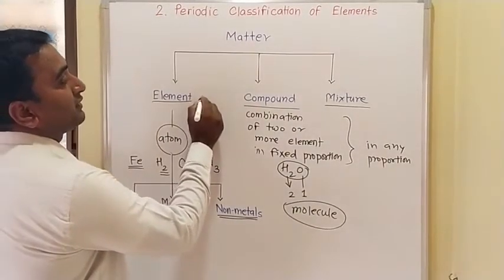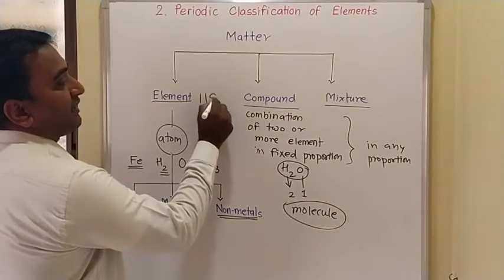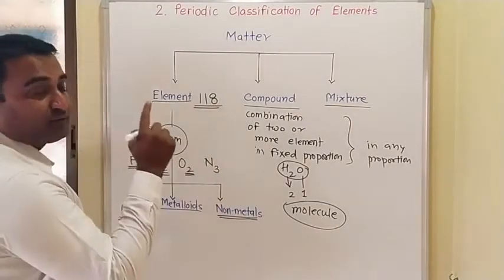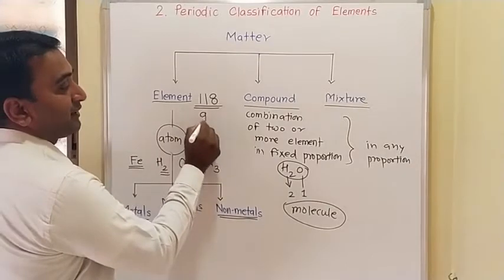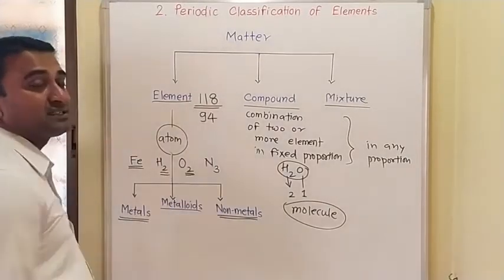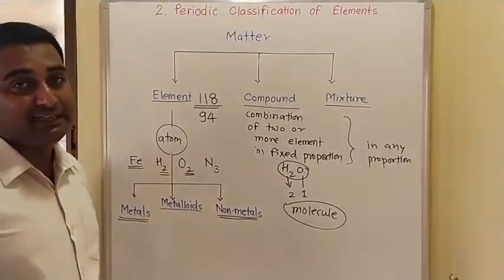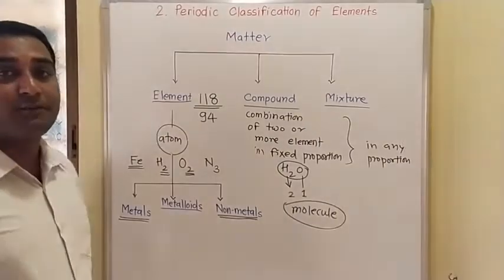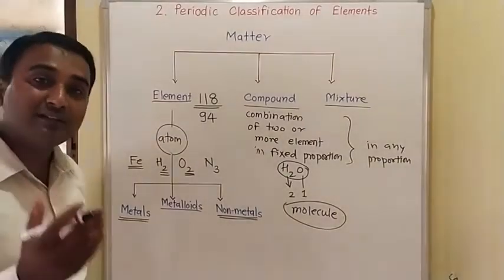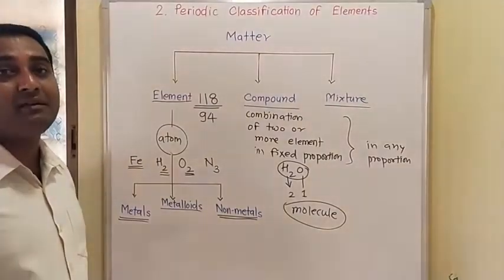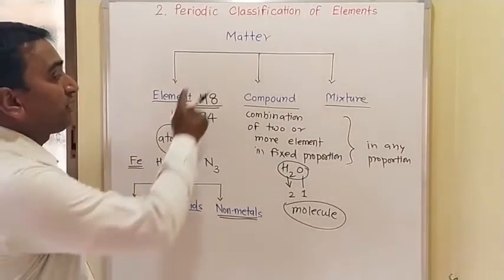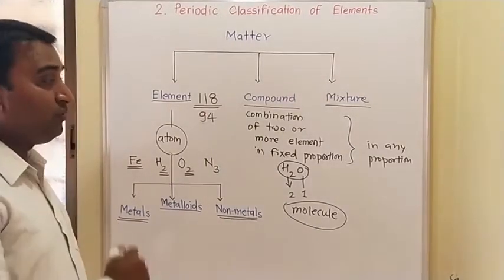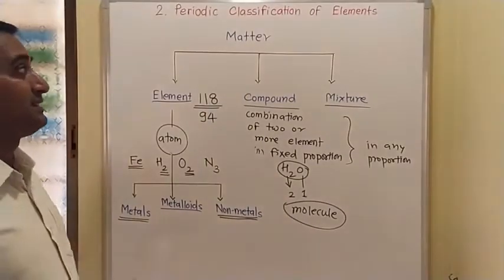This is the general information about matter. How many elements do we have in nature? According to the periodic table, we have 118 elements. Out of these 118 elements, 94 elements occur naturally — they exist in nature. The remaining elements are not stable or are synthetic, made in a laboratory.